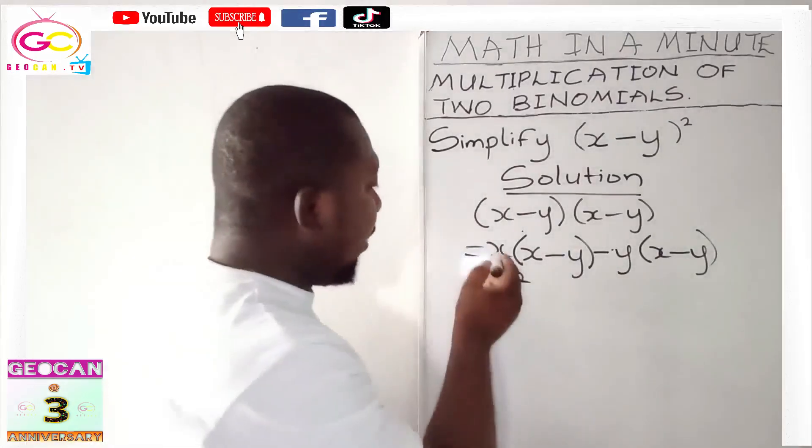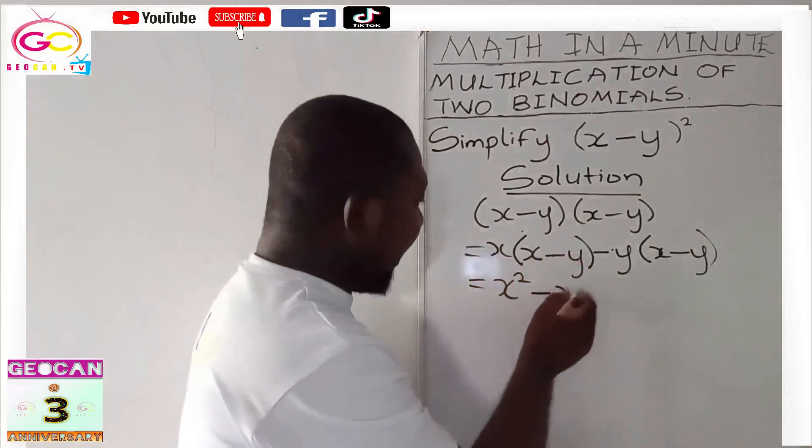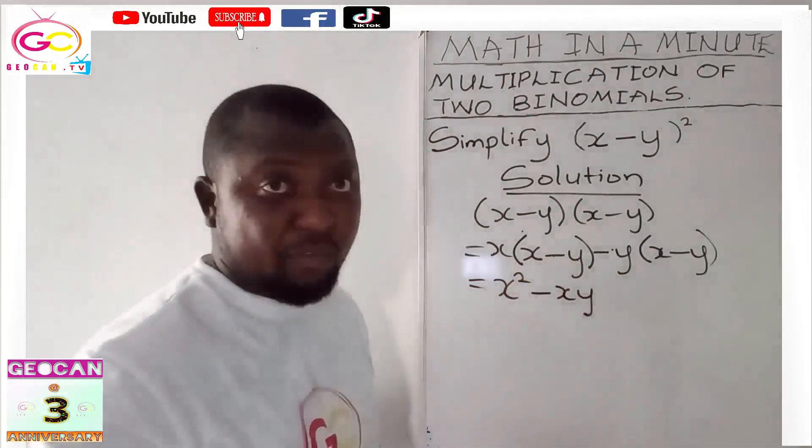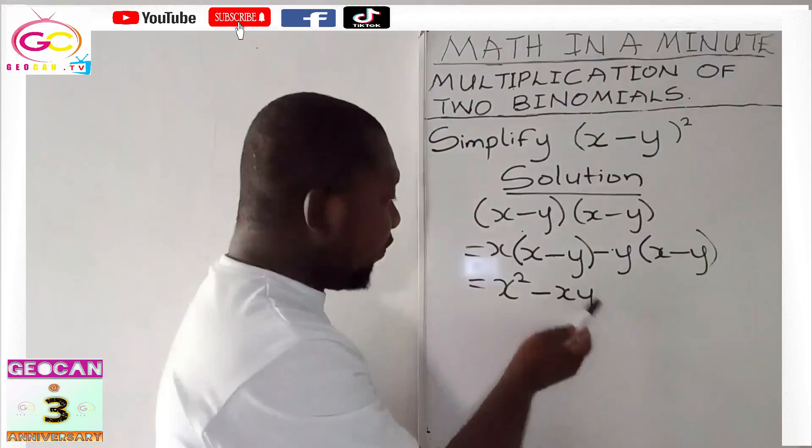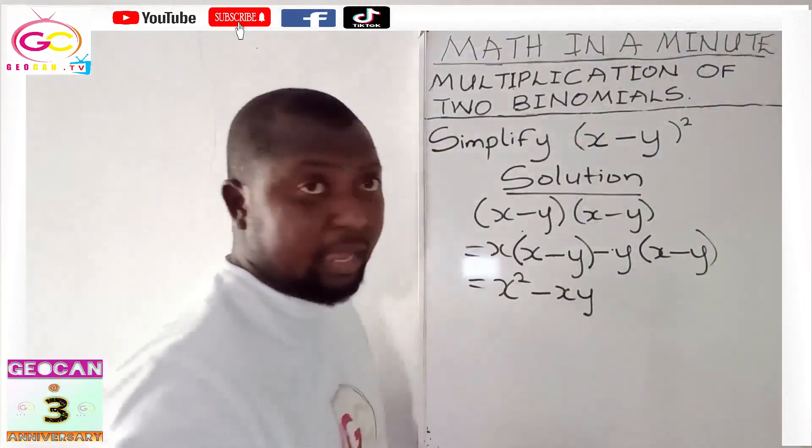Now x times negative y will give us negative xy. You arrange it alphabetically. That's why x comes before y. Don't write it as yx, write it as xy alphabetically.